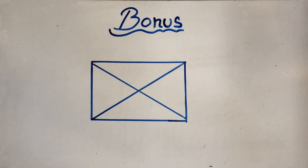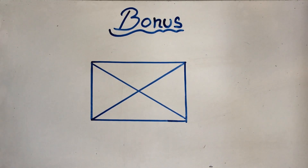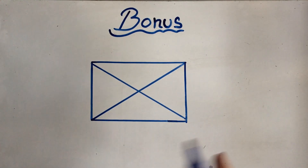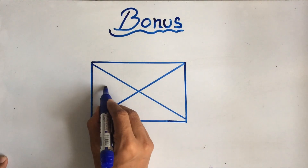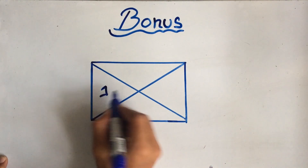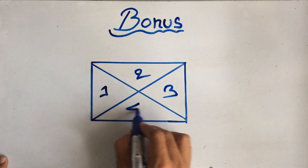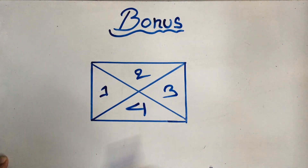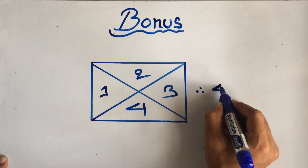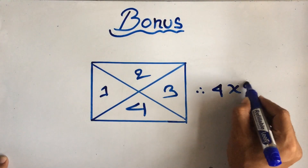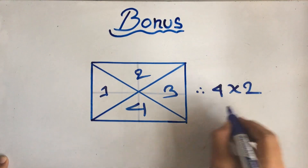As a bonus — and this is probably my first YouTube video so please support me, like, subscribe, and hit the bell button — for this picture, count the triangles: one, two, three, four. Multiply by two: four times two equals eight. That's the answer.